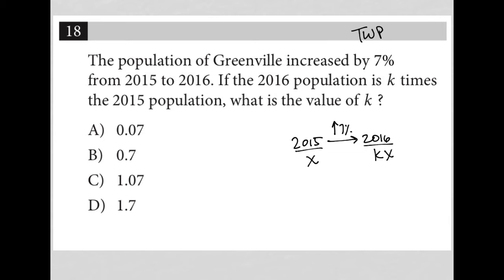The question asks what is the value of K. How does this 7% increase come into play? So if I wanted to increase X by 7%, I would have to multiply that X by 1.07.